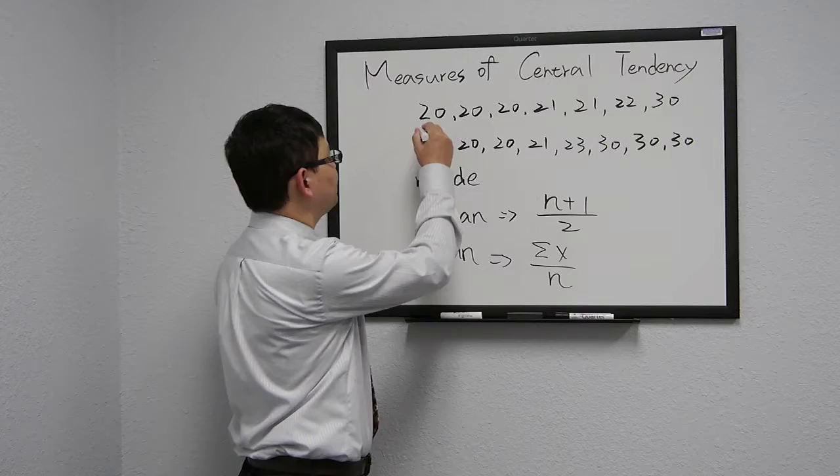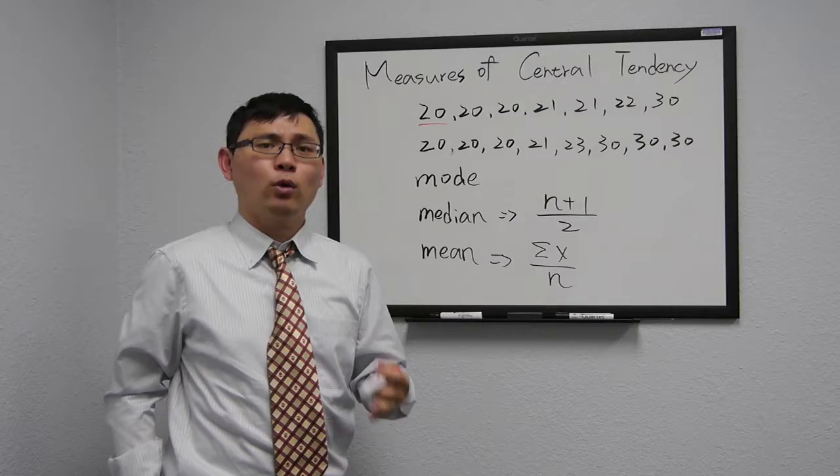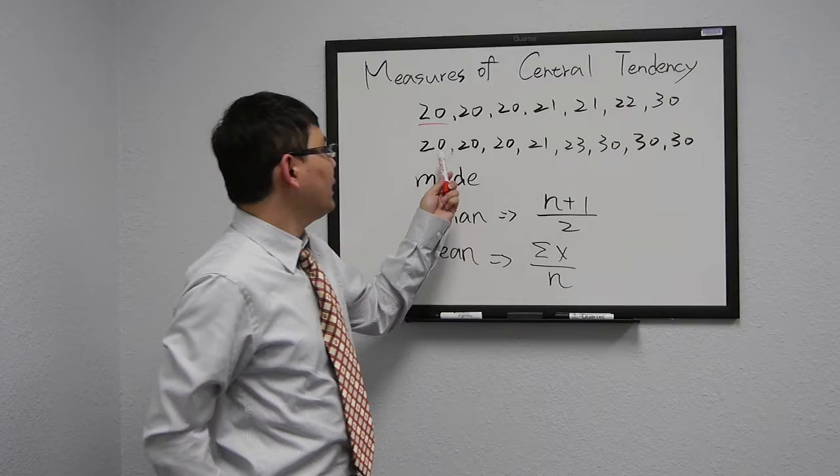But sometimes, there is more than one mode. In the second group of numbers, we got 20, 20, 20, 21,